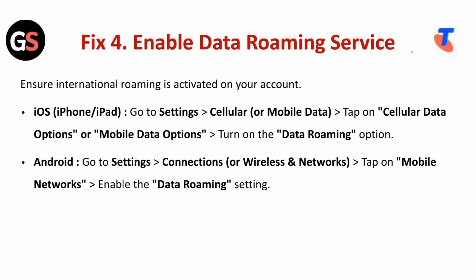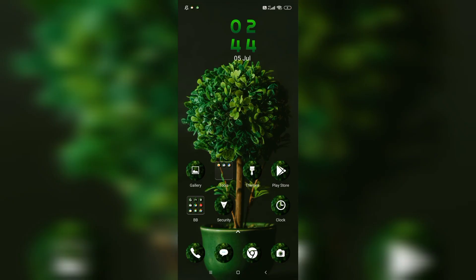Fix four is to enable data roaming. Ensure international roaming is activated on your account. For iOS, go to Settings, then Cellular, and tap on Cellular Data Options or Mobile Data Options, and turn on the Data Roaming option. For Android, go to Settings, then Connections, tap on Mobile Networks, and enable the Data Roaming setting.